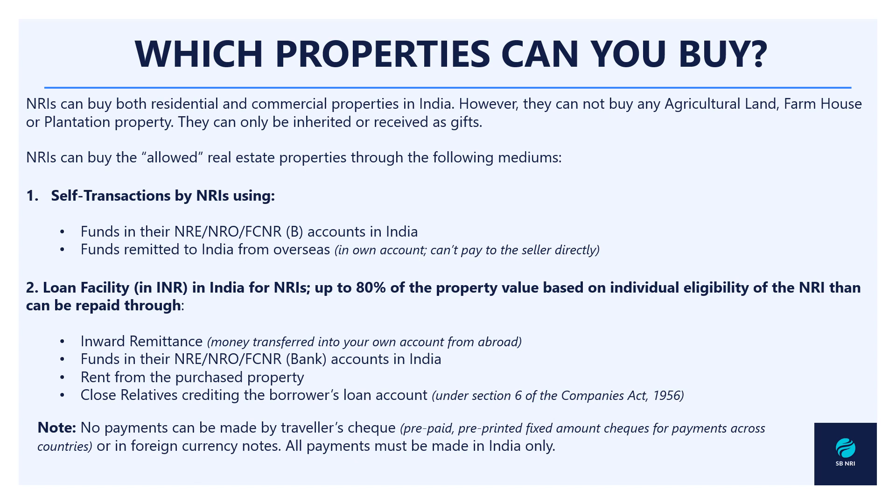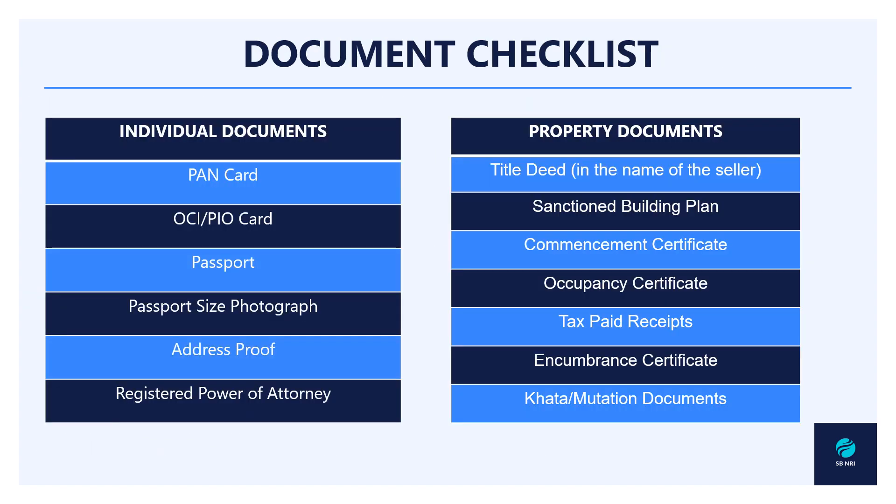The second medium is the loan facility in INR, which will cover up to 80% of the property value based on the NRI's individual eligibility. This loan can be repaid through inward remittances, funds in their NRE, NRO, or FCNR bank accounts, rent from the purchased property, or a close relative crediting the borrower's loan account. This medium falls under Section 6 of the Companies Act, 1956. Note that no payments can be made by traveler's check or in foreign currency notes — all payments must be made in India only.